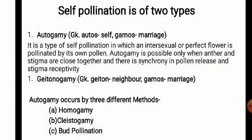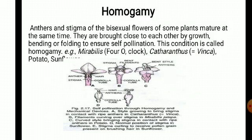Autogamy occurs by three different methods. The first is homogamy. Homogamy means that the male and female parts — that is, the anther and stigma of bisexual flowers — mature at the same time. Self-pollination is only possible when they mature simultaneously; if they mature at different times, self-pollination can never occur. Homogamy is commonly found in Mirabilis plant, potato, sunflower, etc.